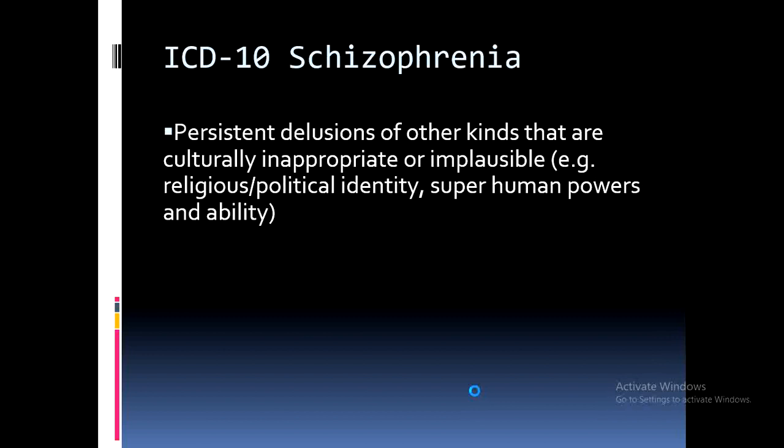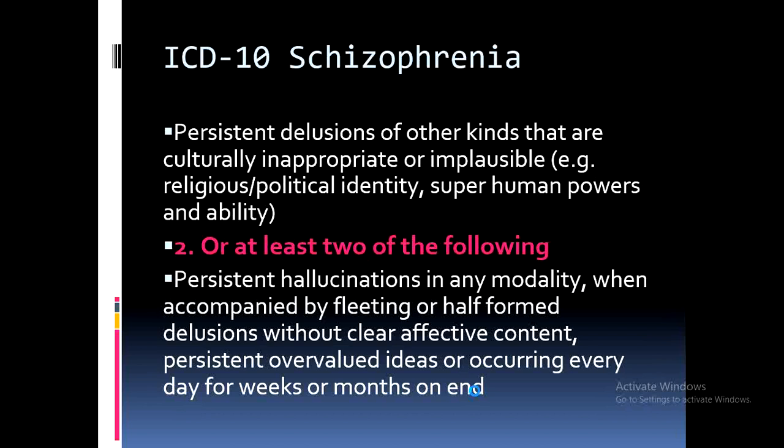Persistent delusions of other kinds that are culturally inappropriate or implausible include religious, political, identity, or superhuman powers. For example, the person believes they have special religious powers, that they are the president of the United States, or that they have superhuman or Herculean strength — claiming they can fight armies and conquer countries, even though they may be economically poor and physically weak.